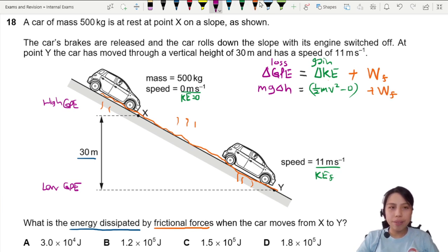Plug in the values. We have 500 times 9.81 times 30 meters equals to half times 500 times the velocity at the end, which is 11 meters per second squared, plus whatever energy we have lost, which we are trying to find. Oh, this should be in orange.